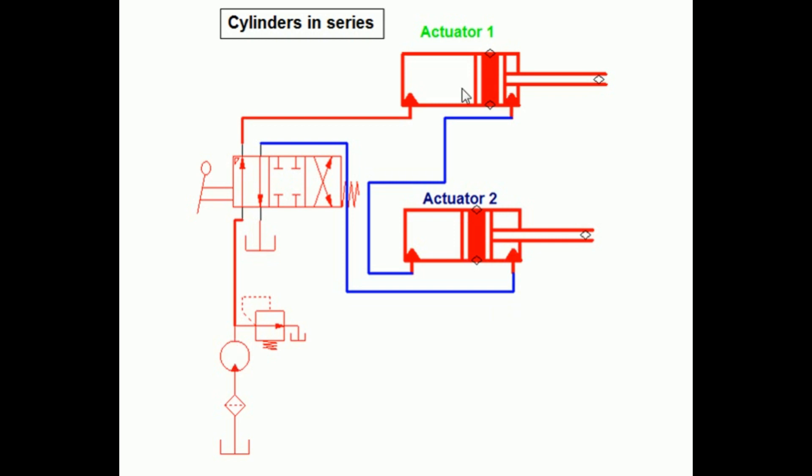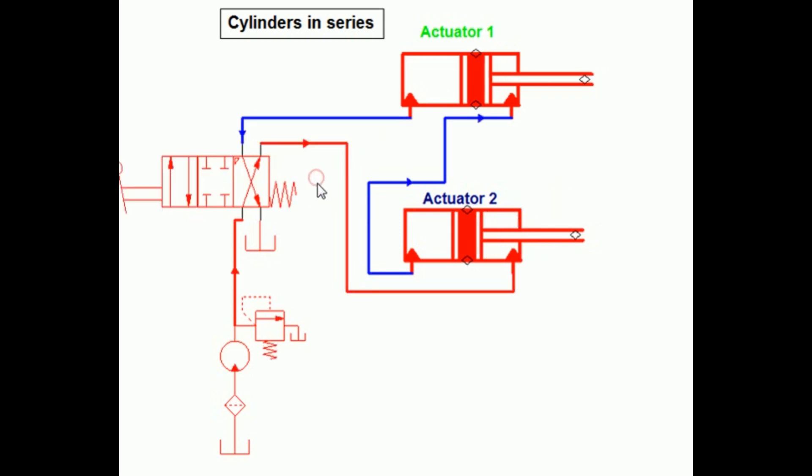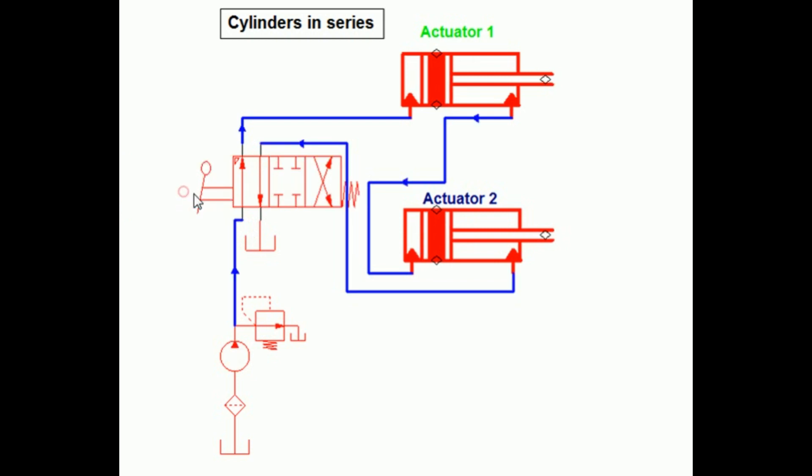For two cylinders to be synchronized, the piston area of cylinder 2 must be equal to the difference between the areas of piston and rod for cylinder 1. Thank you. To learn about more hydraulic circuits, watch other videos.